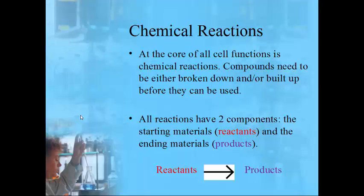Next, different types of chemical reactions. At the core of any cell function is chemistry. Sometimes compounds have to be put together to make something larger; sometimes they have to be broken down into smaller pieces. All reactions have two components: the starting materials, called reactants, and the ending materials, called products. All chemical reactions are written with reactants on the left of an arrow, meaning 'yields,' and products on the right.